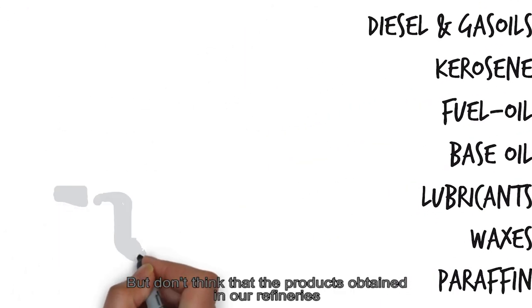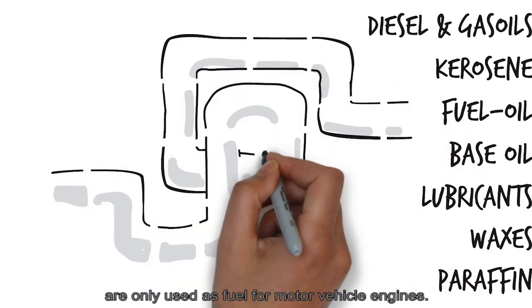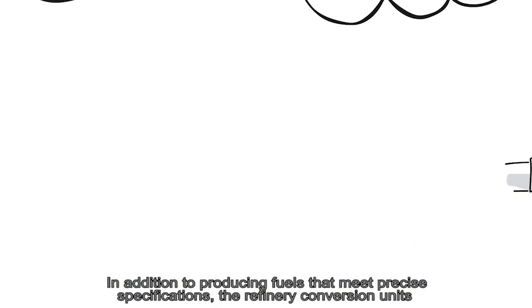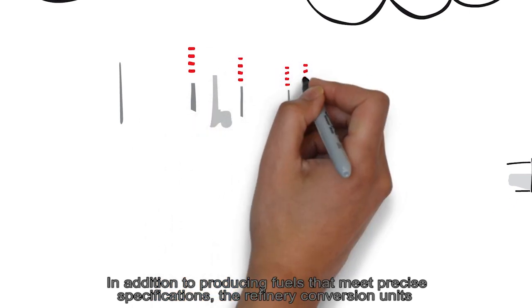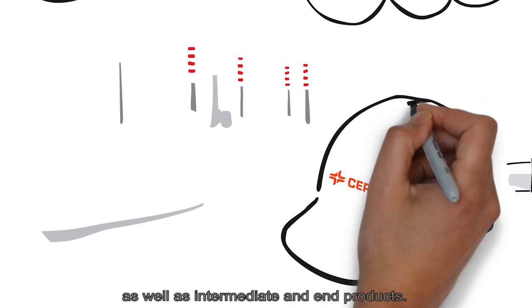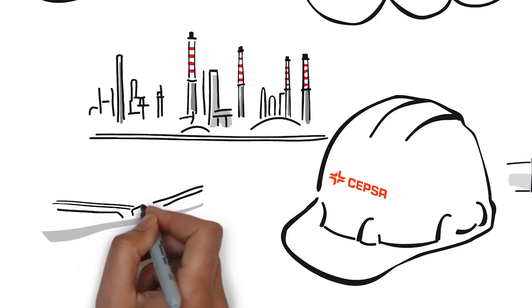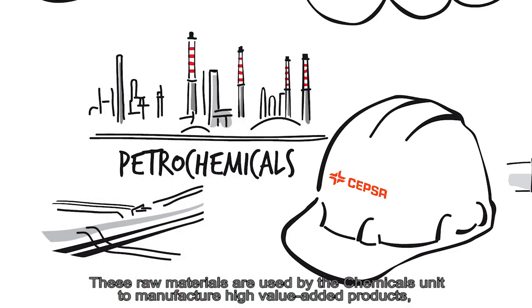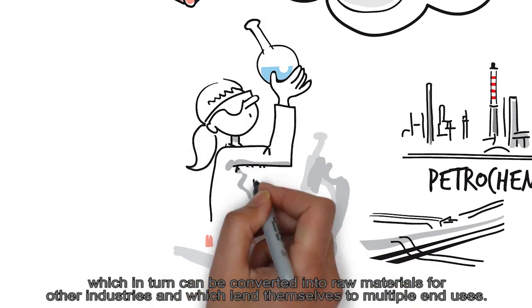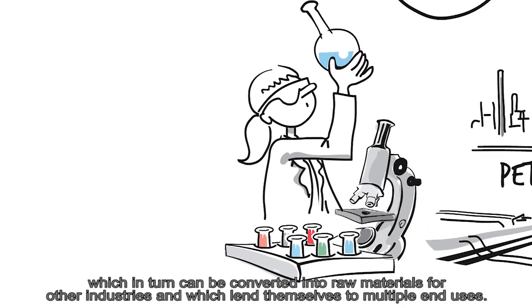But don't think that the products obtained in our refineries are only used as fuel for motor vehicle engines. In addition to producing fuels that meet precise specifications, the refinery conversion units also produce other raw materials for other processes, as well as intermediate and end products. These raw materials are used by the Chemicals unit to manufacture high value-added products, which in turn can be converted into raw materials for other industries and which lend themselves to multiple end uses.